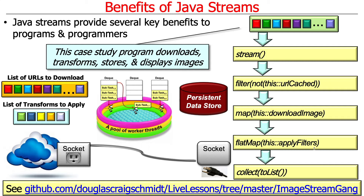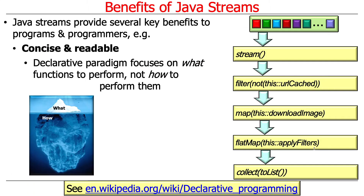What's cool about that is, once you know what it does and you read what the code says, it is almost a one-to-one thing. We're going to go ahead and download non-cached images, apply filters, and store them in a list. It's very declarative.